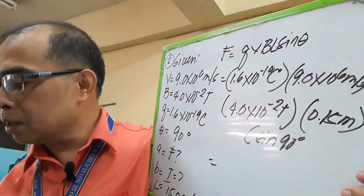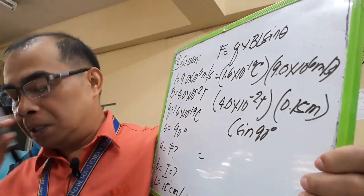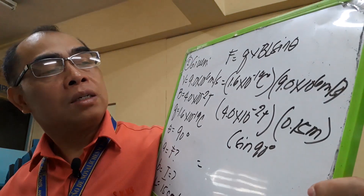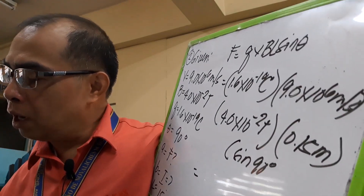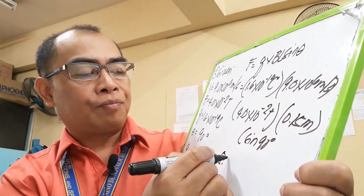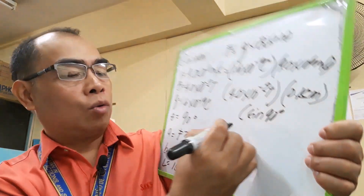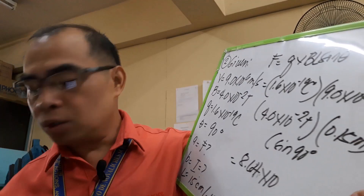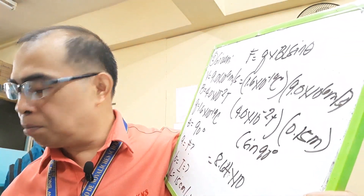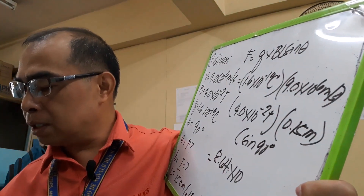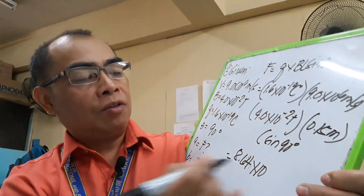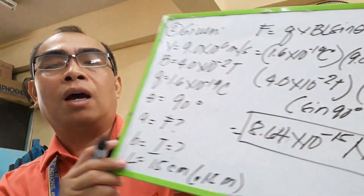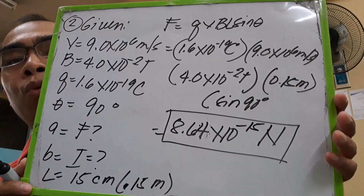Sin 90° = 1. Multiplying: 0.15 × 4 × 9 × 1.6 = 8.64. For the exponent: −19 + 6 + (−2) = −15. So the force is 8.64 × 10⁻¹⁵ Newtons. This is the answer for problem number 2, letter A.